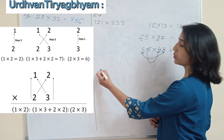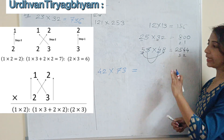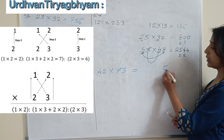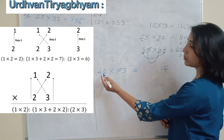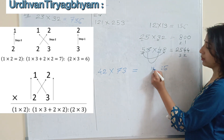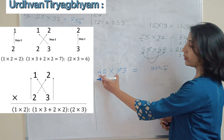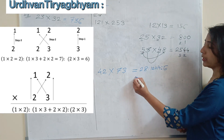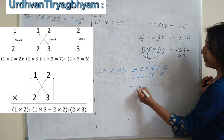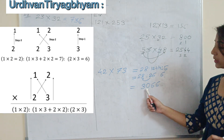Let's take the product of 42 multiplied by 73 using the same sutra. Unit place: 2 into 3 is 6. Cross product: 4 into 3 plus 7 into 2 is 12 plus 14 equals 26 — write 6, carry 2. Last vertical: 4 into 7 is 28, plus carry 2 gives 30. So the product of 42 and 73 is 3066.